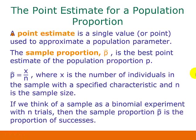A point estimate is just a single value or a point used to approximate a population parameter. In this section, since we're talking about proportions, we're going to talk about approximating a population proportion. The sample proportion, represented by P-hat, is the best point estimate of the population proportion P.